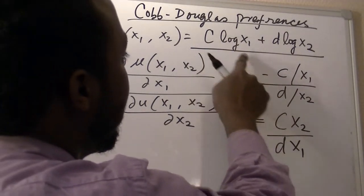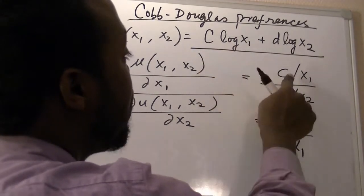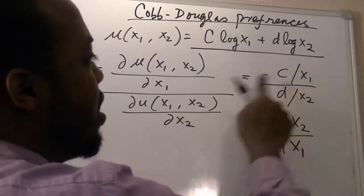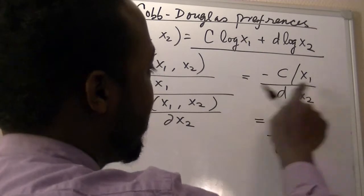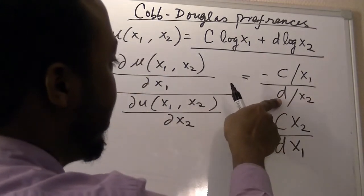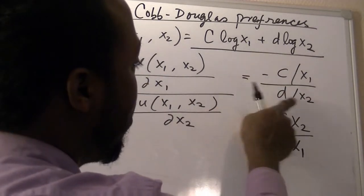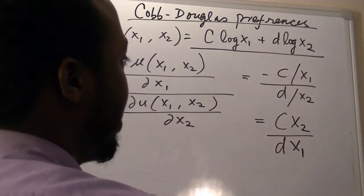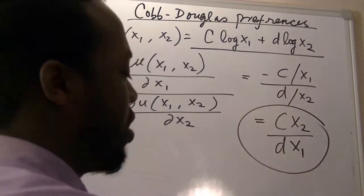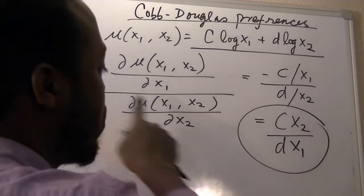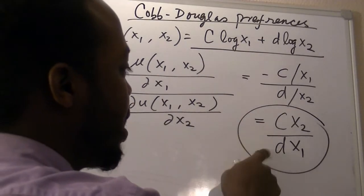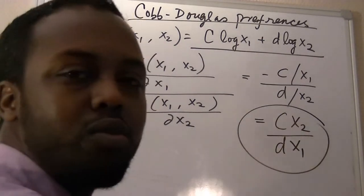So this is c divided by x1, over d over x2. And by rearranging, we get this result, which is the marginal rate of substitution is equal to the parameters times the quantities of the two goods.